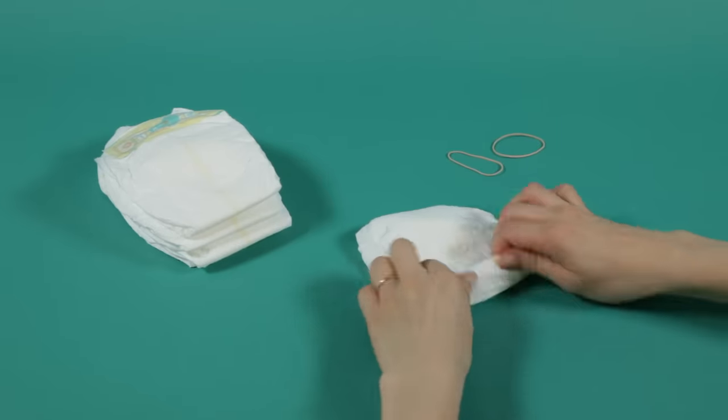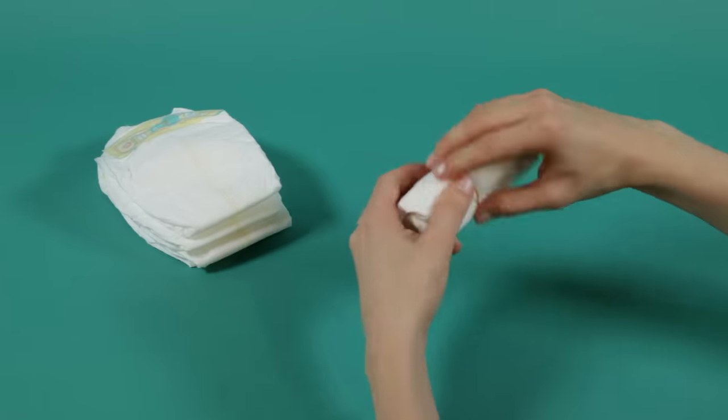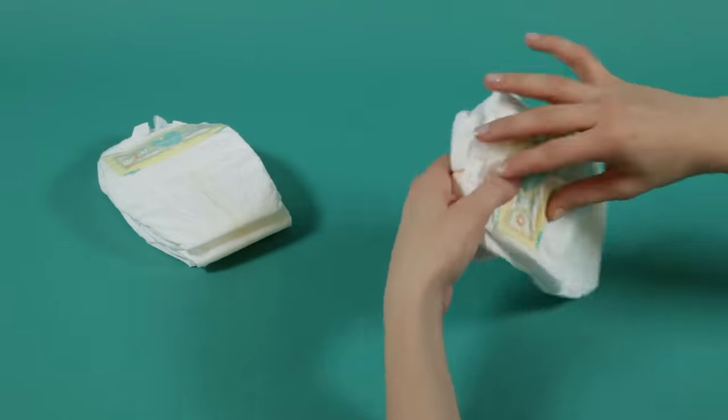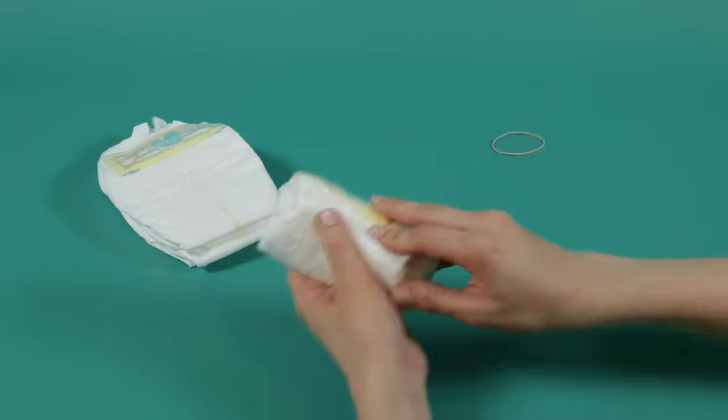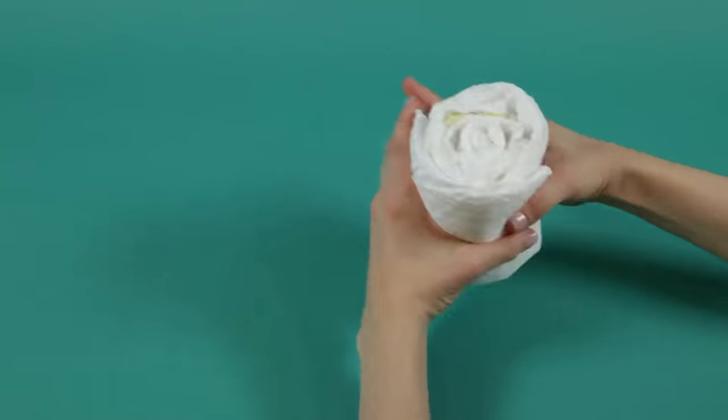To make the wheels for the stroller, take five diapers. Roll one diaper as a base and secure with a rubber band. Then wrap the four remaining diapers around that base. Secure tightly with a rubber band.